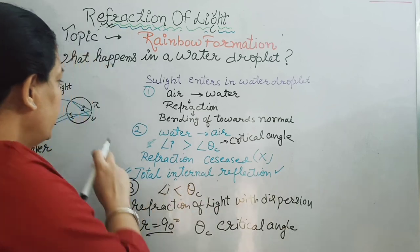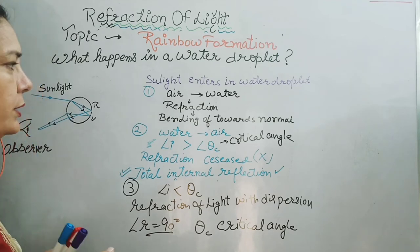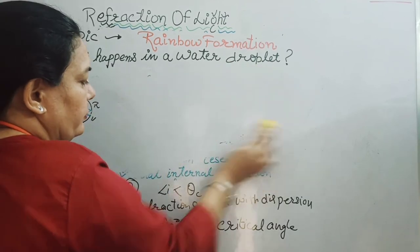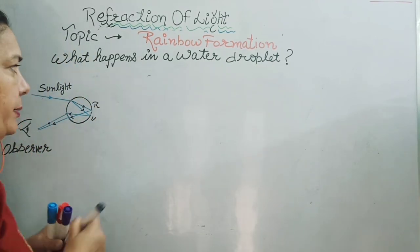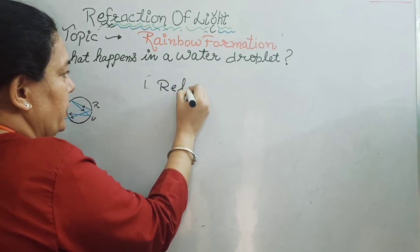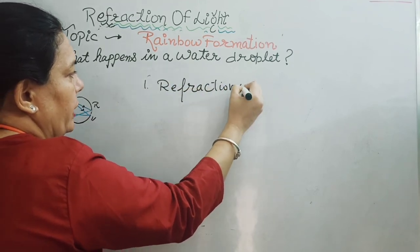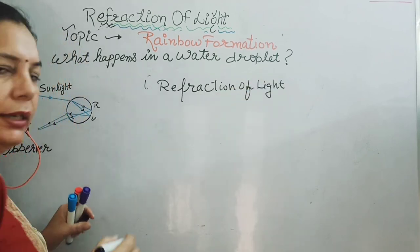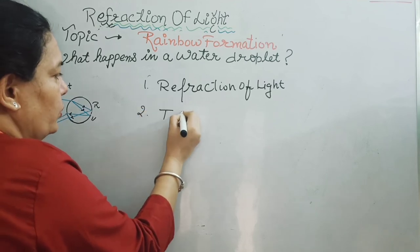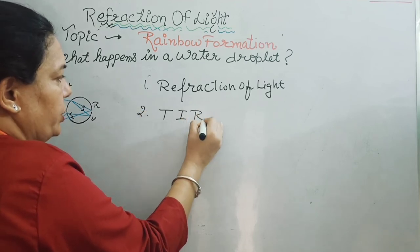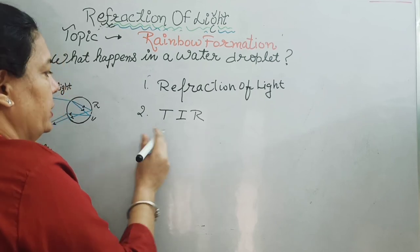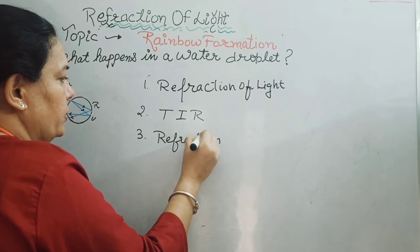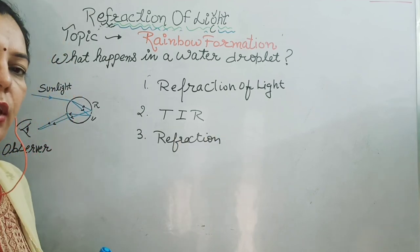During rainbow formation, the activities that happen are: first, refraction of light takes place; second, it is followed by total internal reflection; then again it is followed by refraction of light. And due to this sequence, we are able to see rainbow formation.